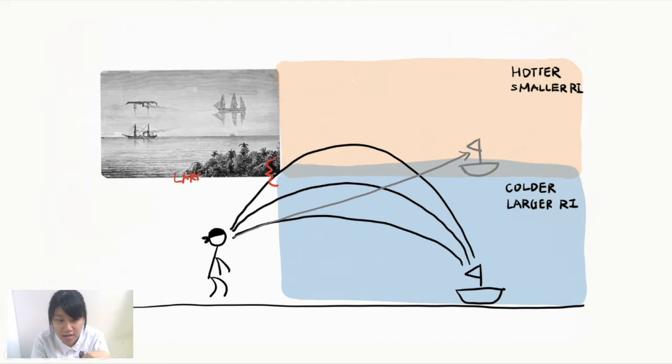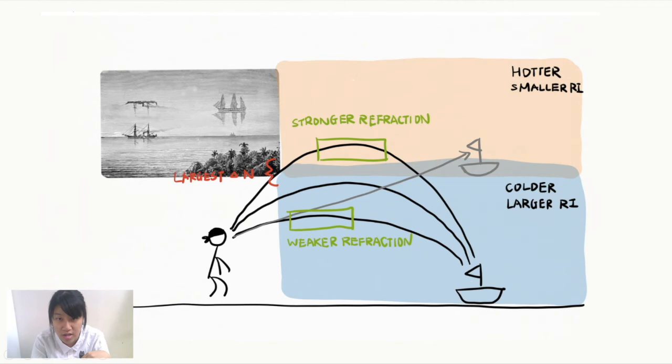Moreover, in the case of Fata Morgana, the refractive index will change more rapidly in the middle, while smoother at the top and the bottom of the atmosphere. This causes stronger refractions and weaker refractions in respective segments of the air, forming multiple images as light intersects in our eyes from different directions. These multi-image characteristics make Fata Morgana a fascinating complex superior mirage.